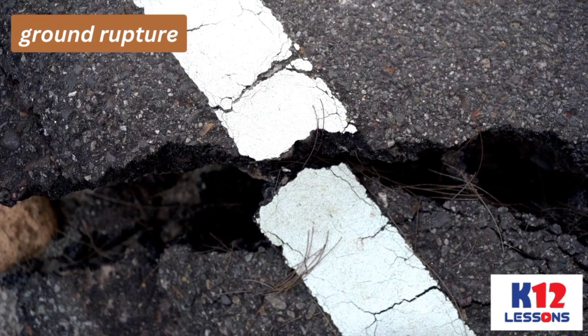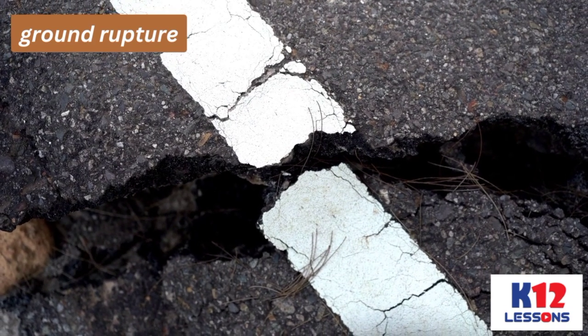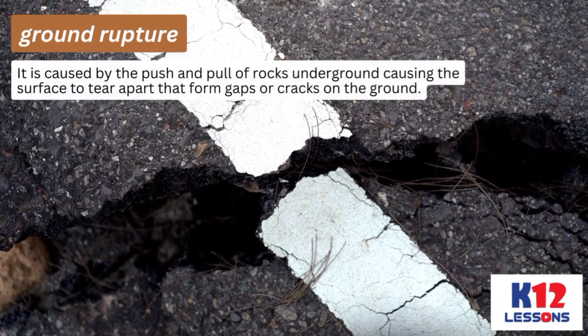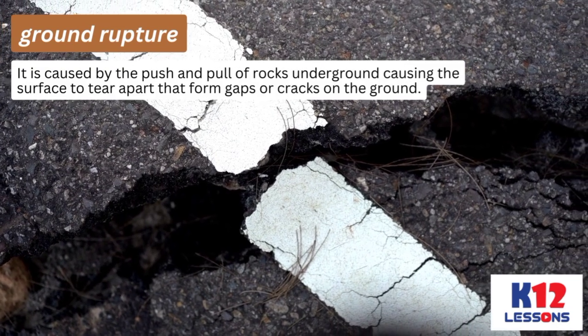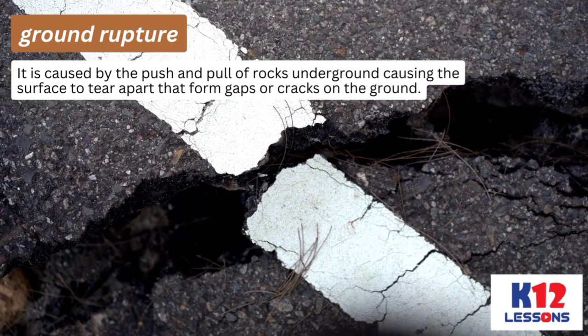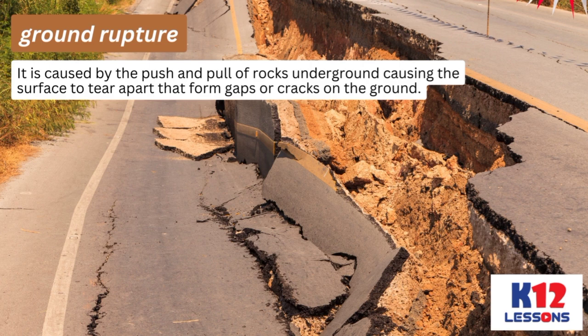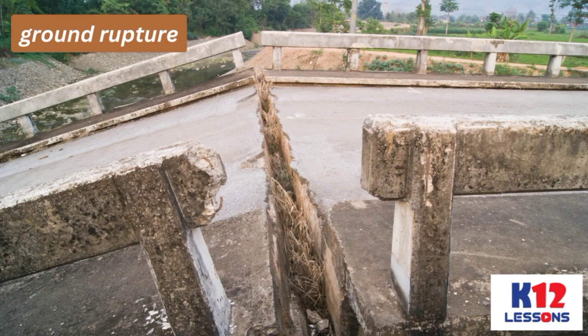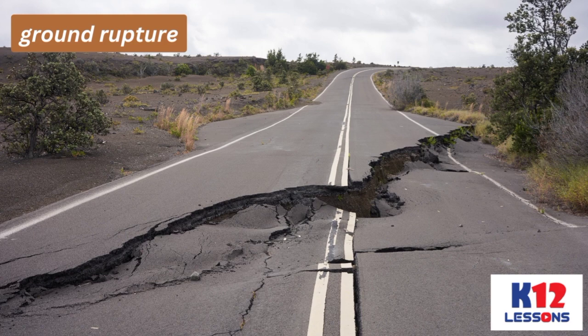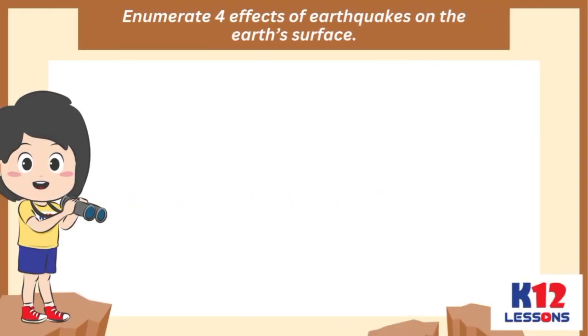A ground rupture occurs during an earthquake. It is caused by the push and pull of rocks underground, causing the surface to tear apart and form gaps or cracks on the ground. Ground rupture can damage buildings, bridges, houses, roads, and other structures.